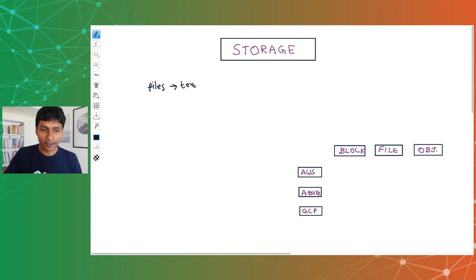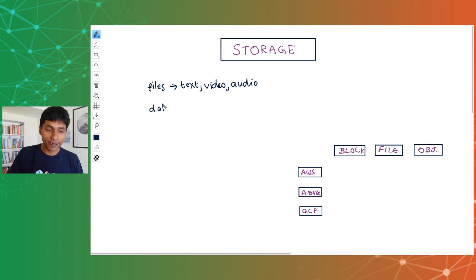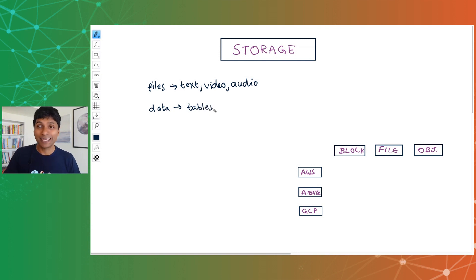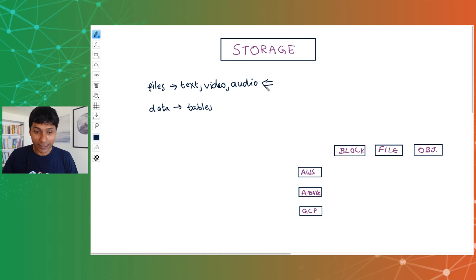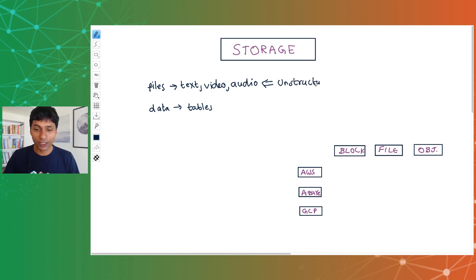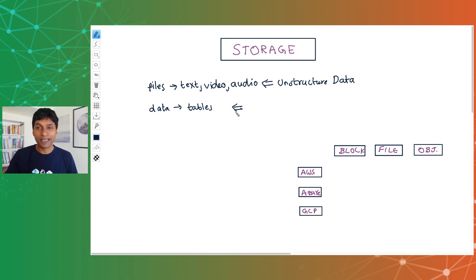There are text files, video files, audio files, exe files, and things like that. Other than that, you might also want to store data in tables with relationships, foreign keys, primary keys, maybe in a NoSQL database. This specific category of data stored in files — text files, video files, audio files — is called unstructured data. And data typically stored in relational or NoSQL databases, in tables, is called structured data.